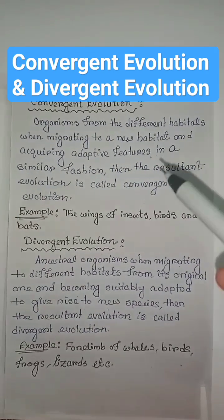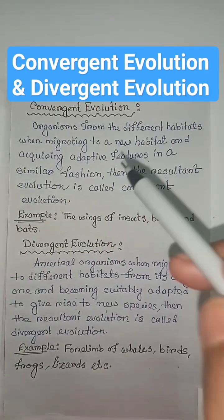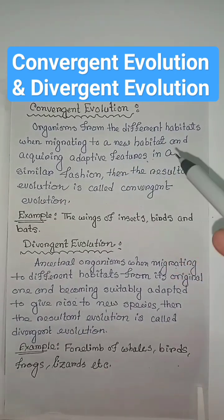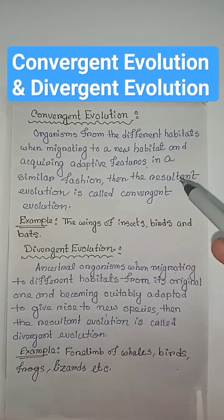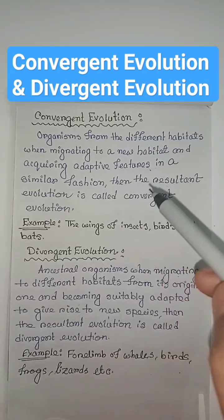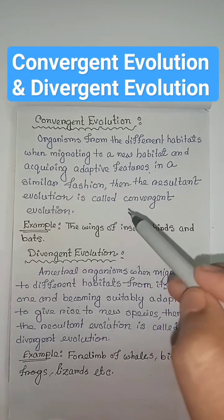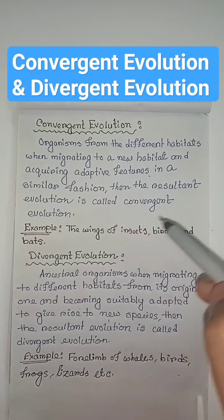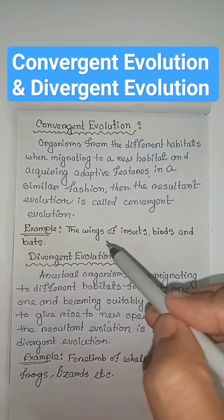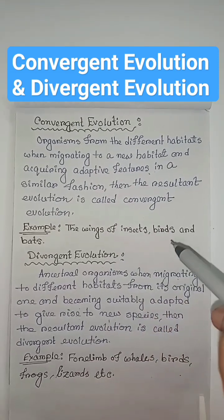Organisms from different habitats, when migrating to a new habitat and acquiring adaptive features in a similar fashion, then the resultant evolution is called convergent evolution. For example, the wings of insects, birds, and bats.